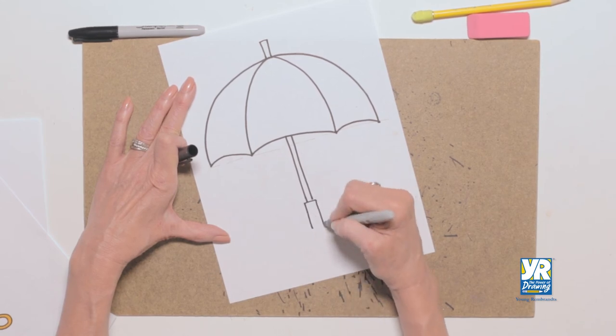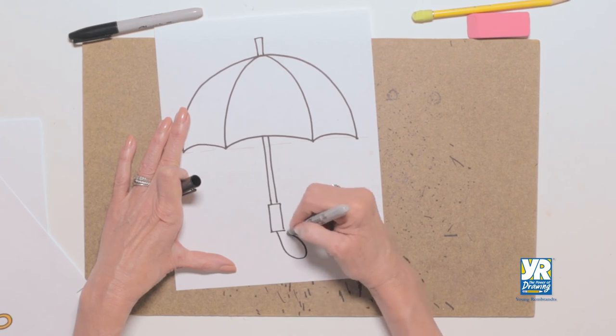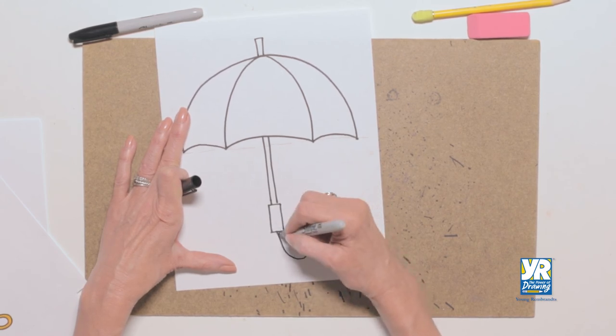There's our handle. Now we have a little loop at the bottom because, you know, we fold it all up, we're going to hold on to that. There.